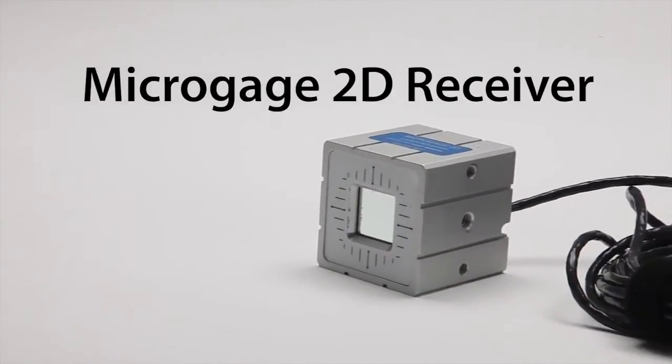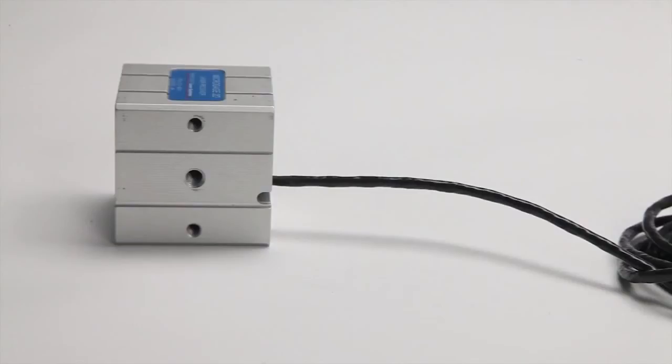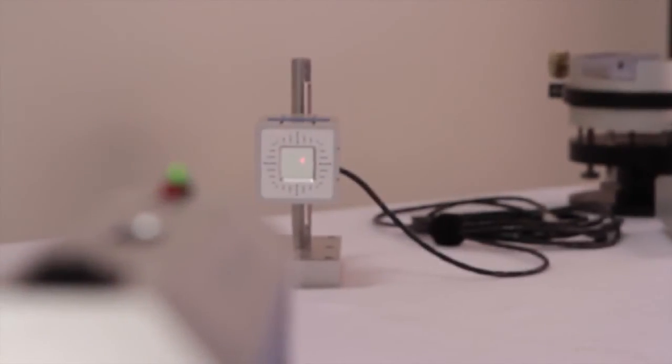The micro gauge receiver is also machined from a solid block of aluminum, and is constructed in a two inch cube. On front of the receiver, there is a port where the laser reference beam enters and is sensed by an electronic detector located inside.